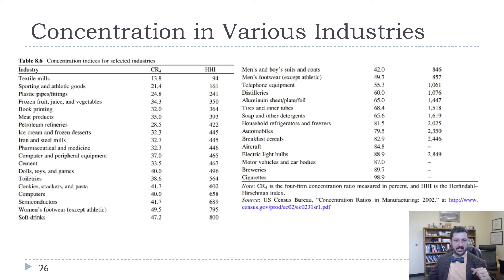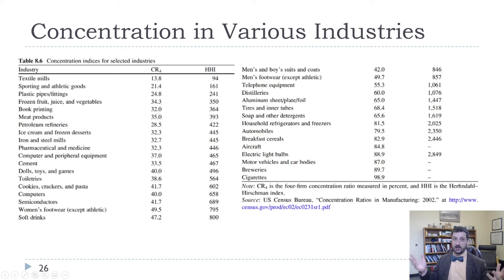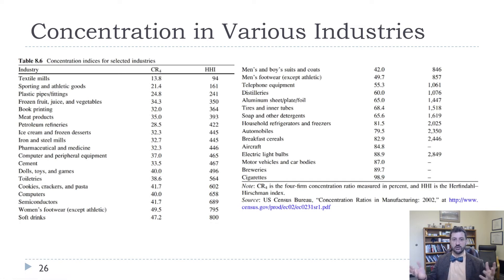Ice cream and frozen desserts: the top four firms have 32.3% market share and the HHI is 445, so still pretty low. Soft drinks — that's a pretty concentrated industry. The CR4 is 47.2, which is above our 40% threshold that we talked about earlier.